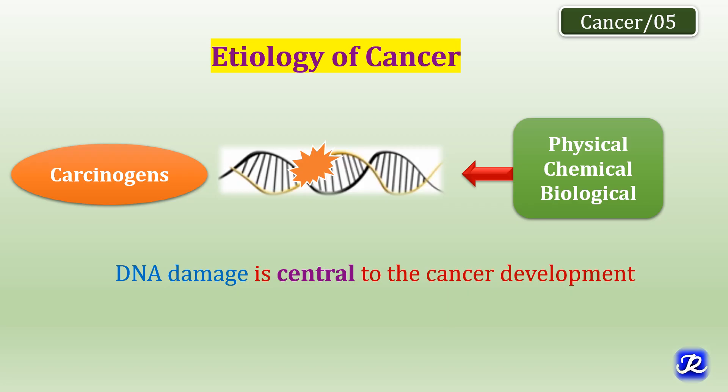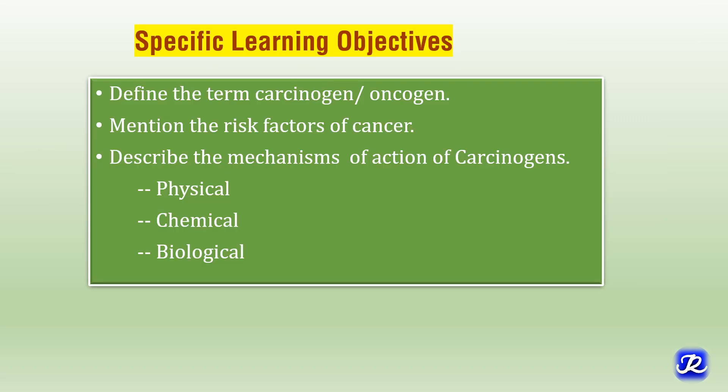Hello everyone. Today let's learn about etiology of cancer. At the end of this session you should be able to define the term carcinogen or oncogen, mention the risk factors of cancer, and describe the mechanisms of action of various carcinogens like physical, chemical and biological carcinogens.